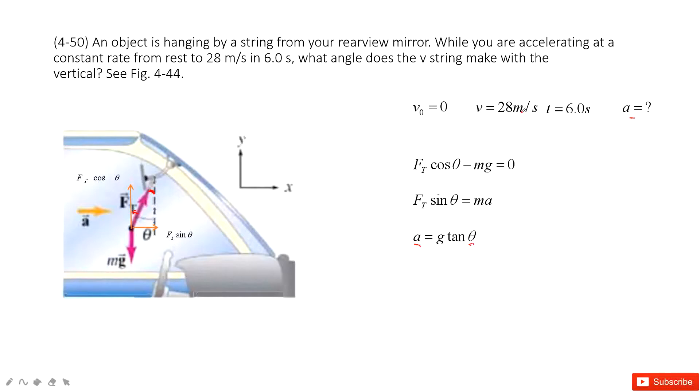It is easy for us to find acceleration. Acceleration equals the change of the velocity divided by time t. See, in this one, you can find acceleration. And then you input acceleration in this equation. You can get angle theta. Then everything is done.